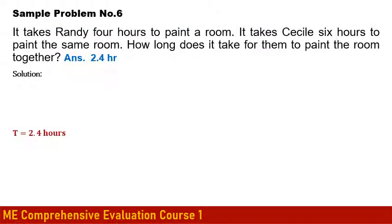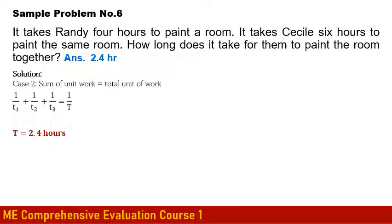Sample Work Problem: It takes Randy 4 hours and Cecil 6 hours to paint the same room. Using Case 2: 1/6 + 1/4 = 1/T. Solving, T equals 2.4 hours. This makes sense — working together reduces the time from 6 or 4 hours down to 2.4 hours.